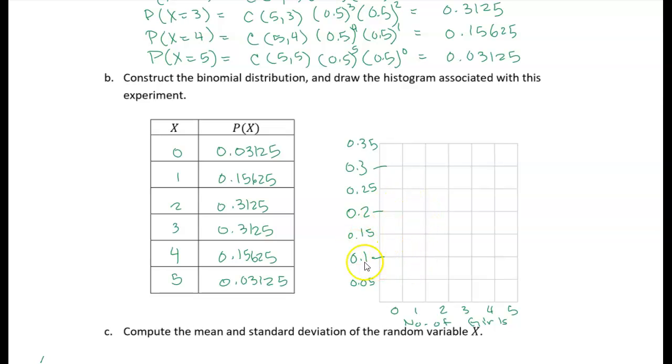So 0.03 is about there. So I'm just going to sketch that in. And then I'm just going to keep going. 0.156, so let's put that in about here. And just draw my little bar, and so on.